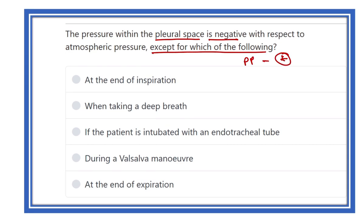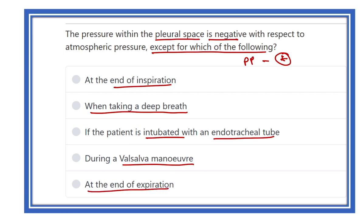The options are: at the end of inspiration when taking a deep breath; if the patient is intubated with an endotracheal tube; during the Valsalva maneuver; and at the end of expiration. We have to find out in which condition the intrapleural pressure is positive.